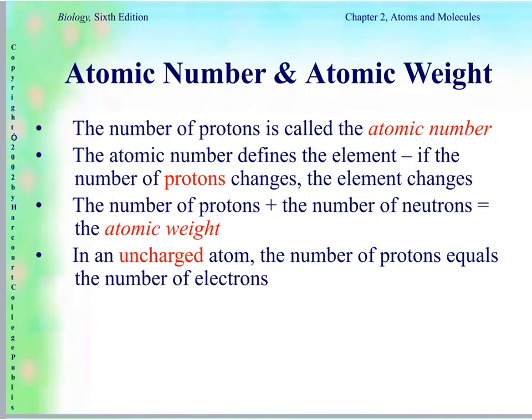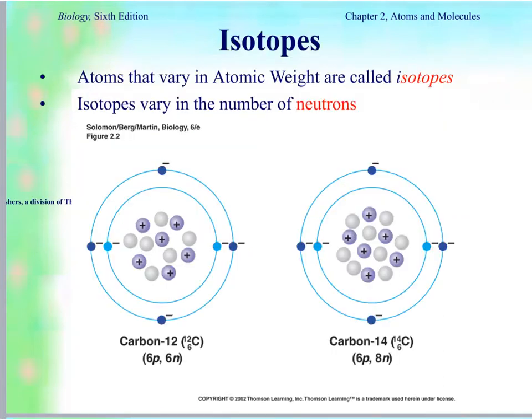The number of protons is called the atomic number, and it defines that element — if the number of protons changes, that element changes. If you take the number of protons and add the number of neutrons, you get the atomic weight. In an uncharged atom, the number of protons will always equal the number of electrons. Atoms that have different atomic weights due to having a different number of neutrons are called isotopes.